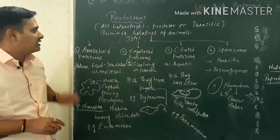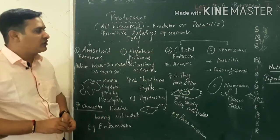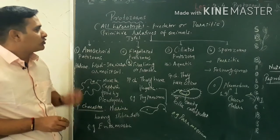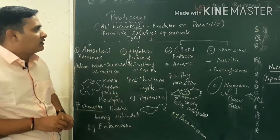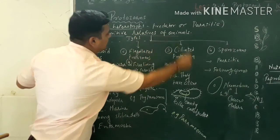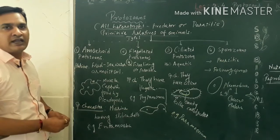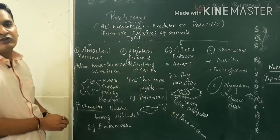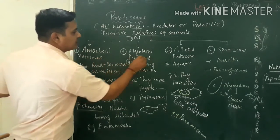So protozoans are nothing but all the heterotrophs, predator or parasitic unicellular groups. In the protozoan groups, there are all heterotrophic, predators and parasitic organisms which are single cell groups, and they are also particularly related to animals. They are the ancestral animal beginners. This group consists of four different types of organisms and all are unicellular.